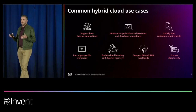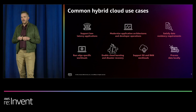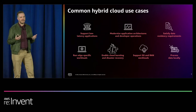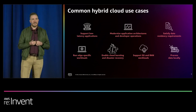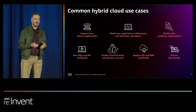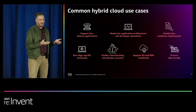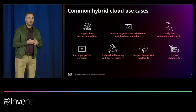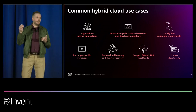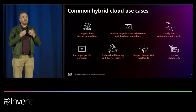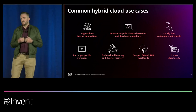So why did we first build EKS Anywhere? There are a bunch of customer use cases we were targeting. The first one is low-latency applications. You might have a gaming company that needs to service their customers in an area where there isn't an AWS region yet, and they need low latency to the game servers, especially for competitive games. You might want to be servicing Egypt, for example, and we don't have a data center in Egypt yet, so you rack some nodes in a data center in Turkey to service those customers, and you still want to run Kubernetes there.